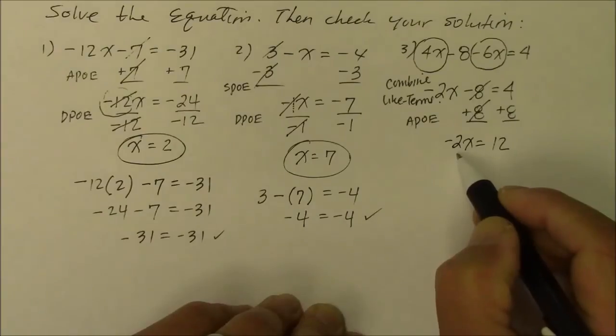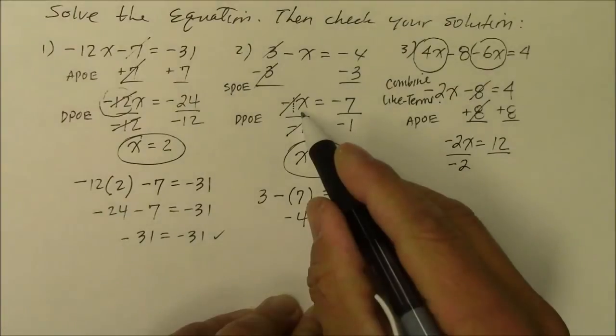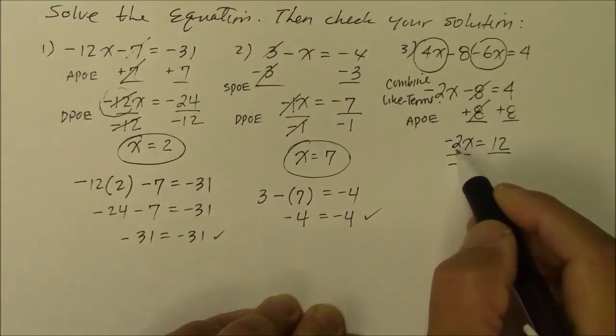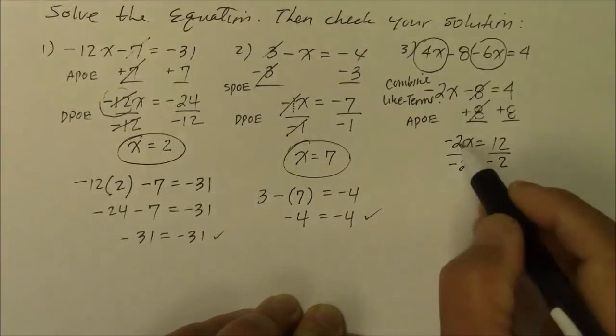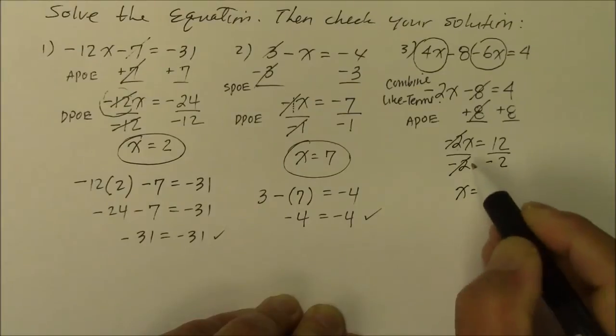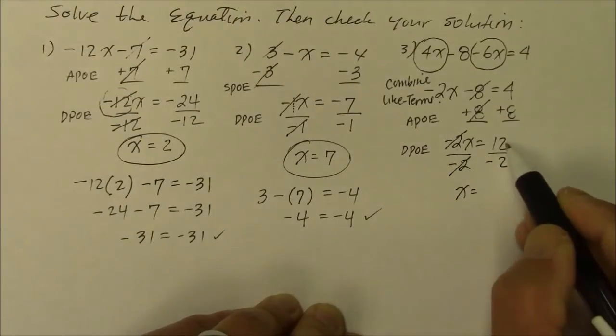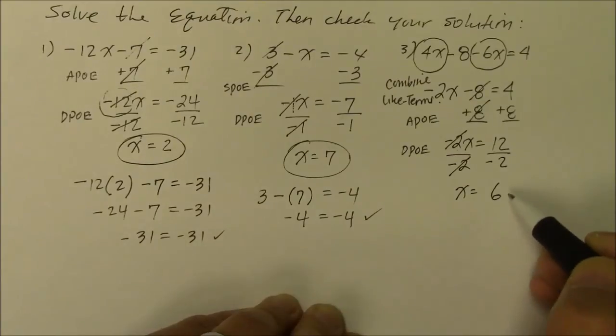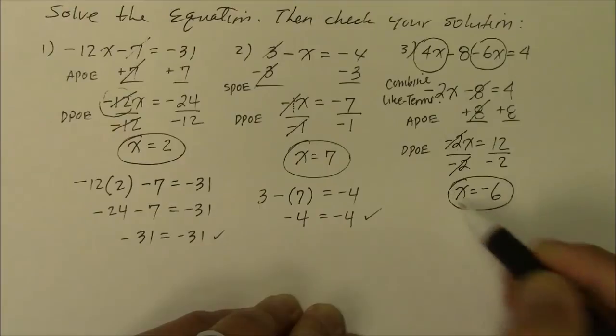And how do I move that negative 2 out there? Divide that negative 2. Here was negative 1, divide negative 1. Negative 2, divide negative 2. So negative 2 and negative 2 simplifies to become a positive 1x. And what am I doing? I'm doing division property of equality. Here, 12 divided by 2 is 6. But remember, positive and negative is negative. There it is.